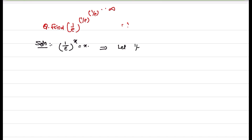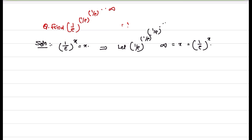Let 1 by E to the power of 1 by E to the power of 1 by E up to infinity be equal to x. That can be written as 1 by E to the power of x, because 1 by E is a repeated value.